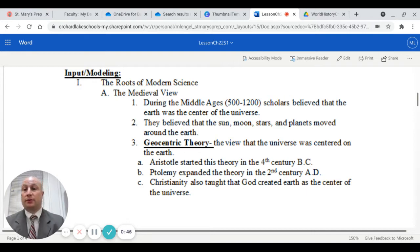Let's take a look at the roots of modern science. The medieval view, during the Middle Ages, scholars believed that the Earth was actually the center of the universe. I think what they're trying to say is the Earth was the center of what we call our solar system. They generally believed that the sun, the moon, the stars, the planets moved around the Earth. This was called the geocentric theory, the view that the universe was centered on the Earth. Aristotle started this theory in the 4th century BC. Ptolemy expanded the theory in the 2nd century AD.